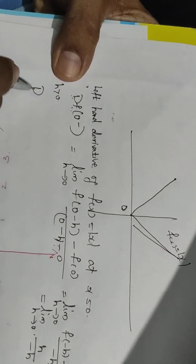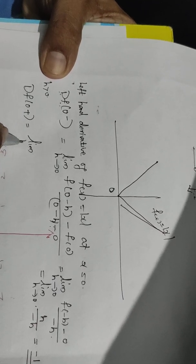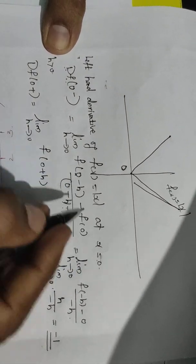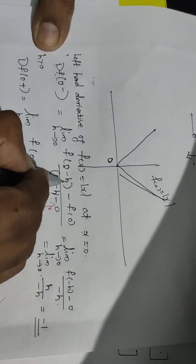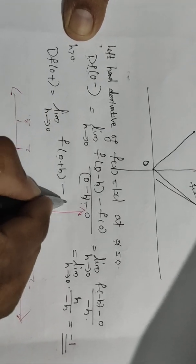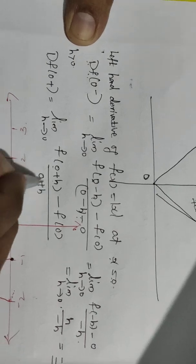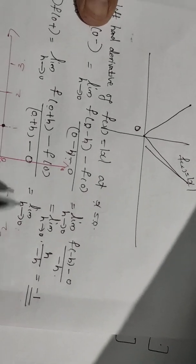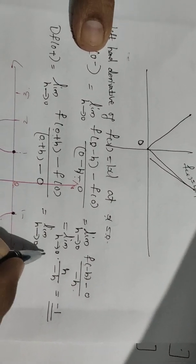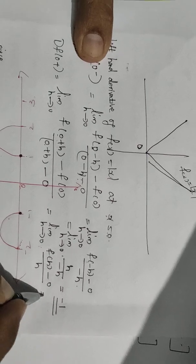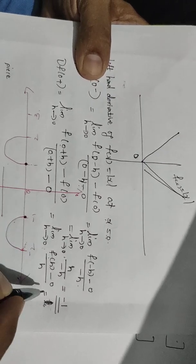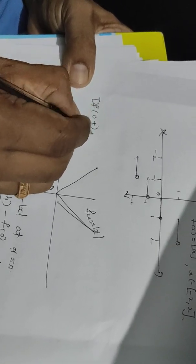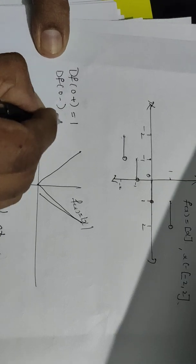Now, the right-hand derivative of f at 0 plus, that is df of 0 plus, is the limit as h tends to 0 of f of (0 plus h). So f of 0 plus h equals h, giving a limit of 1. Therefore df of 0 plus equals 1.